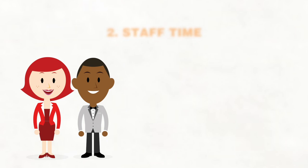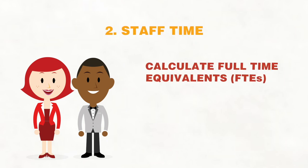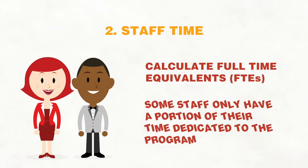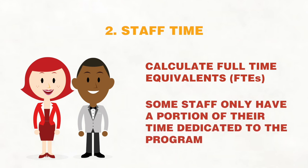Number two, staff time. This cost allocation method includes calculating staff time and any full-time equivalents, or FTEs, dedicated directly to the program's execution and management. Remember that some staff could only have a portion of their time dedicated to the program.